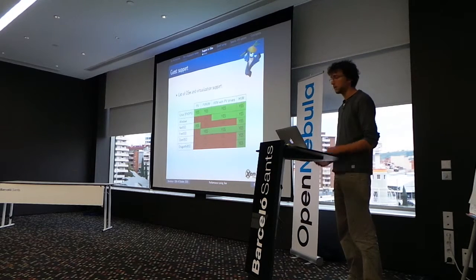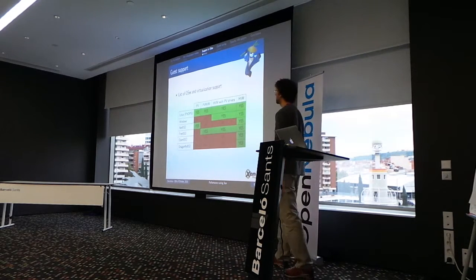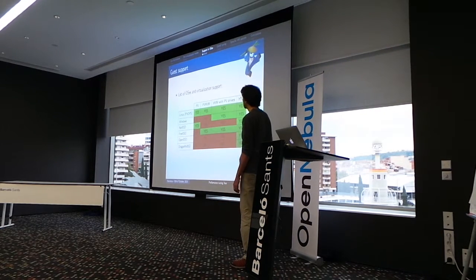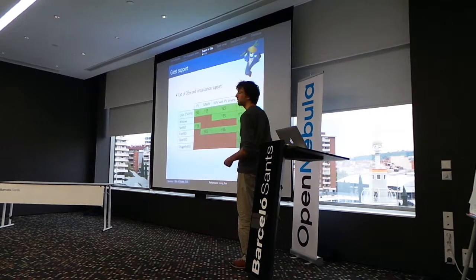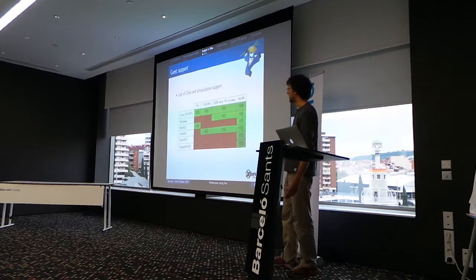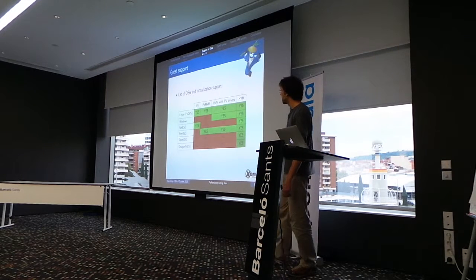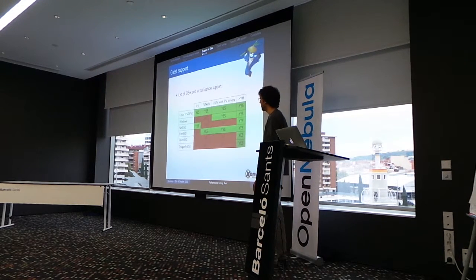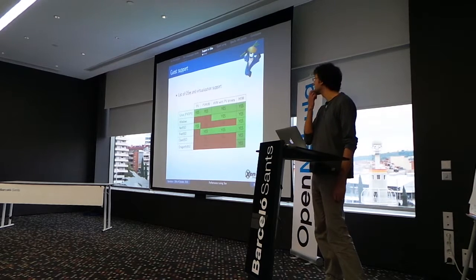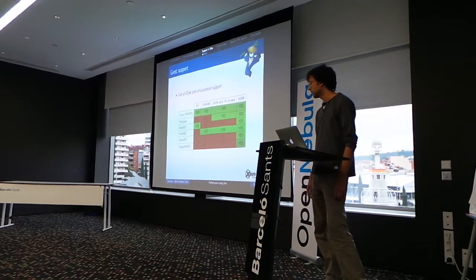Here I have a list of different guest operating systems and the modes you can run them in on Xen. Linux supports running in all possible modes. For Windows, you can run it as an HVM guest using all emulated hardware, but you can also install PV drivers to get better network and disk performance. NetBSD is the only other guest that can run as a pure PV guest. FreeBSD can run as a PV HVM guest. I've been told OpenBSD is trying to integrate PV drivers for disk and network, so we'll probably see improvements there soon.